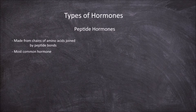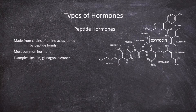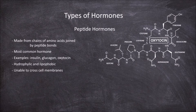Examples of peptide hormones include insulin, glucagon, and oxytocin. Here we can see that the hormone oxytocin is made up of a series of amino acids joined together. Peptide hormones are hydrophilic and water soluble, but they are also lipophobic, which means they are unable to cross the lipid membrane of cells. Peptide hormones are able to leave the cell they are made in via being packaged into vesicles that can then be excreted through exocytosis.